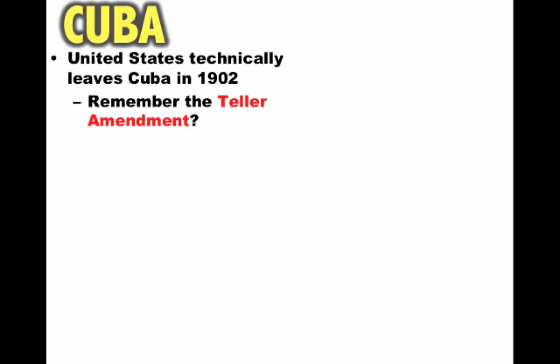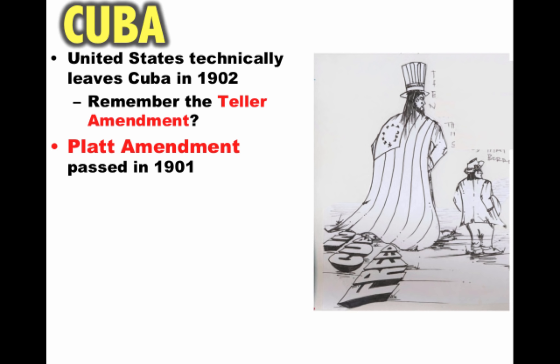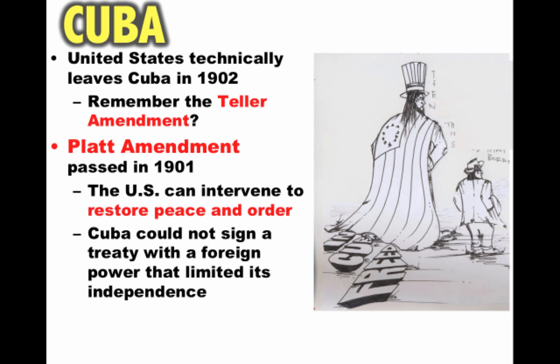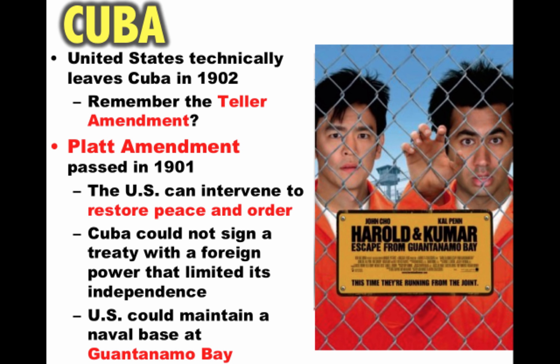Let's look at what the U.S. does in Cuba. Remember the Teller Amendment — we were going to leave after the war. Well, it was replaced by the Platt Amendment, passed in 1901. Cuba's freedom would be partially blocked. Under the Platt Amendment, the U.S. can intervene to restore peace and order in Cuba whenever it feels necessary, Cuba could not sign a treaty with a foreign power limiting its independence, and the United States would maintain a naval base at Guantanamo Bay. Even though the U.S. officially withdrew, Cuba remains a protectorate, and there will be huge resentment among the Cuban people.